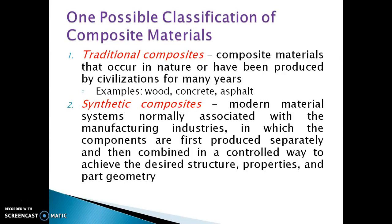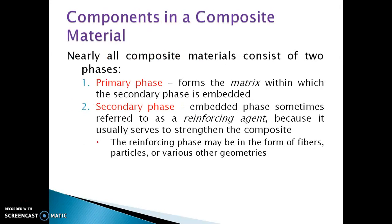Synthetic composites are those that can be manufactured from industries, in which the components are first produced separately and then combined in a controlled way to get a desired structure, desired properties, and desired shape. Those are called synthetic composites.